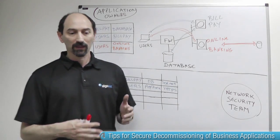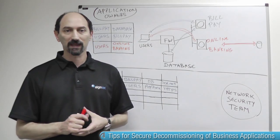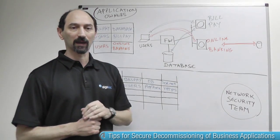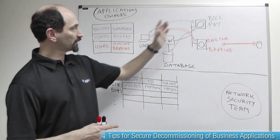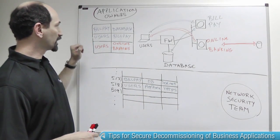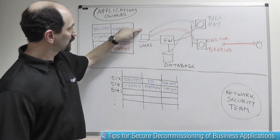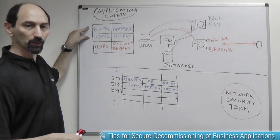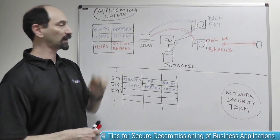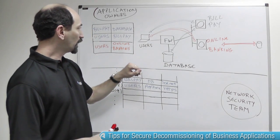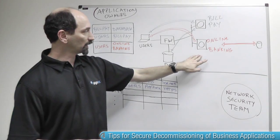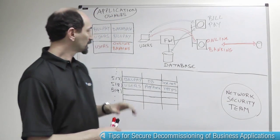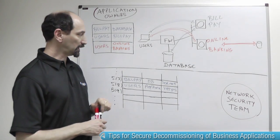Imagine an organization that has tens or hundreds of different business applications. Let's focus on two: a bill pay application and an online banking application. The bill pay system requires communication between users and the bill pay server, and also between the bill pay server and the database. The online banking system requires access from users to the online banking server and has some additional back-end communication behind the scenes.